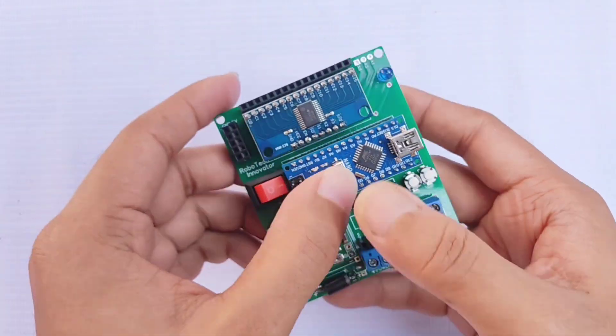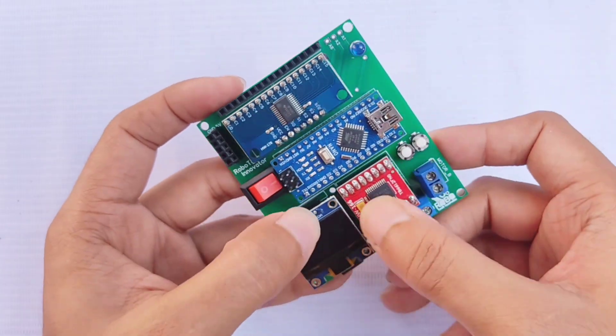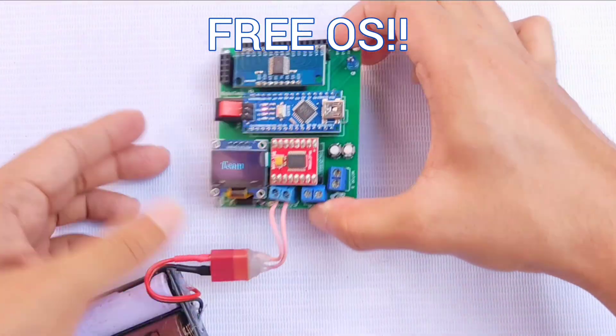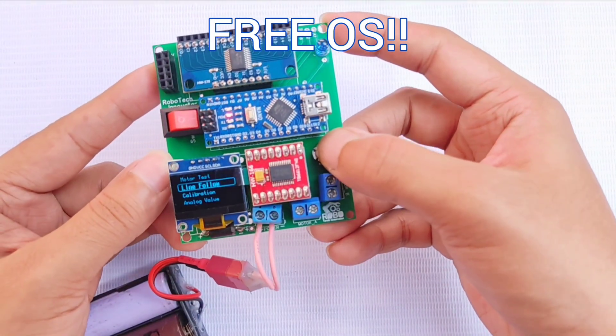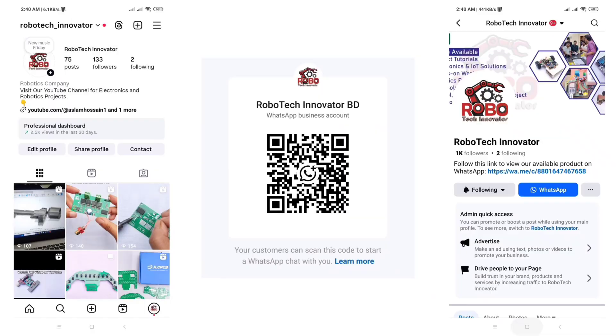If you're looking for a smooth, affordable, and professional PCB manufacturing experience, JLCPCB is the way to go. You can order this board directly from us, and when you purchase it, you'll receive a fully functional operating system with an OLED display, which is completely free with the carrier board. To place an order, simply visit our Instagram, WhatsApp, or Facebook page.